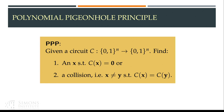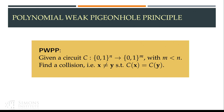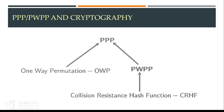In weak PPP, the circuit in the input is compressing — M is less than N — and we are looking for a collision. These classes have very strong connections with cryptography: weak PPP contains all collision-resistant hash functions, in the sense that if weak PPP is in P, then collision-resistant hash functions cannot exist. Similarly, there is a connection between PPP and one-way permutations.